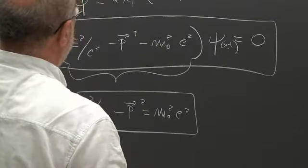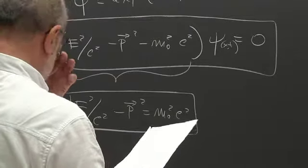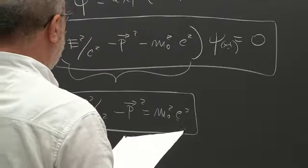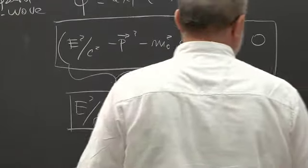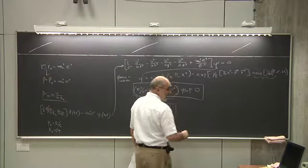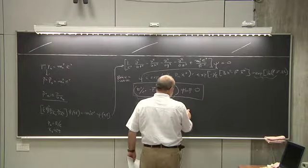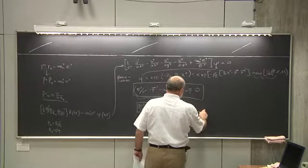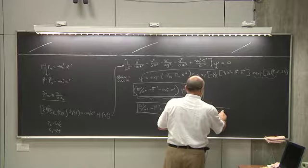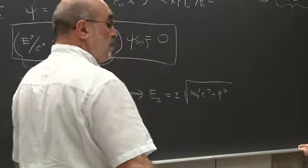A plane wave is a solution of the free Klein-Gordon equation only if the energy and momentum satisfy this mass-shell relation. Given a momentum and a mass, solving for the energy gives E = ± c * sqrt(m²c² + p²). So there are two energies associated to each momentum, whereas in the non-relativistic case there is only one: E = p²/2m.